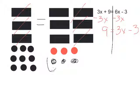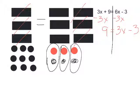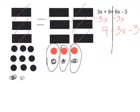If I add 1 positive to 1 negative, that gives me 0. Every time I add a positive to a negative, I get 0. So that's 3 zero pairs, which gets rid of those 3 negatives. But if I add 3 positives to the right, I have to also add 3 positives to the left.